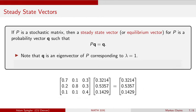So in the case of the election cycle example, we found that one steady state vector was vector q, which was 0.3214, 0.5357, and 0.1429. Multiplying this vector q by the transition matrix P gave us back the same vector q. So this vector is an eigenvector for the eigenvalue lambda equals 1.